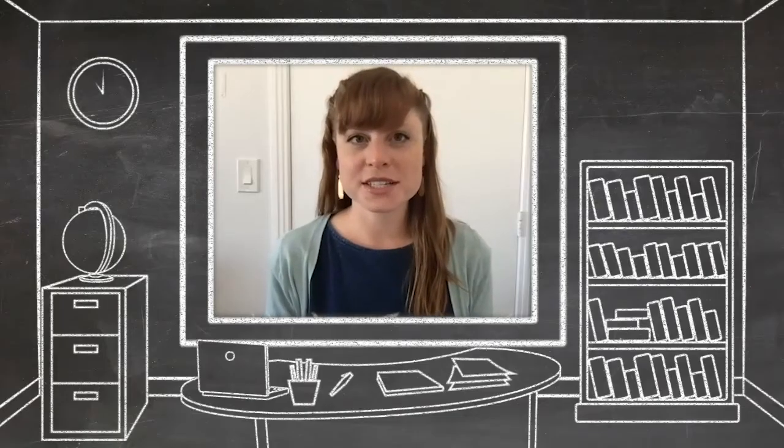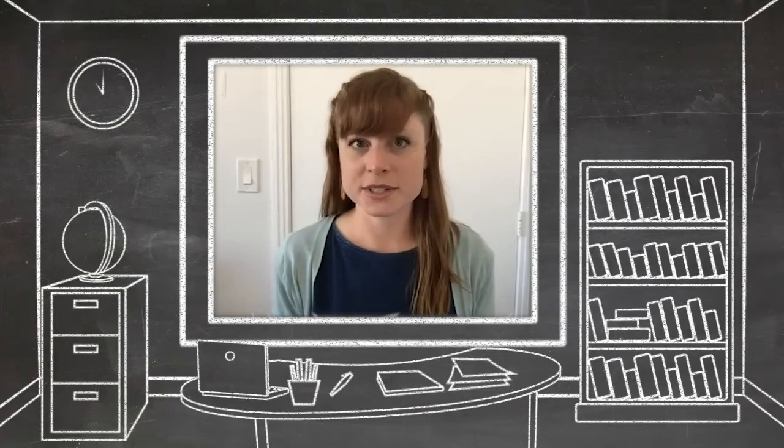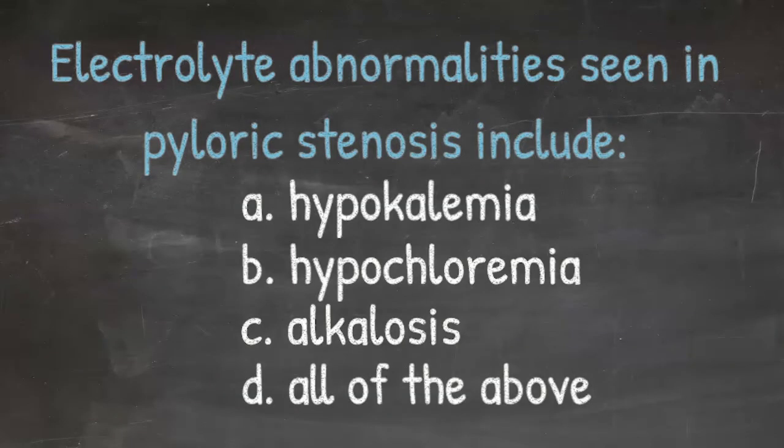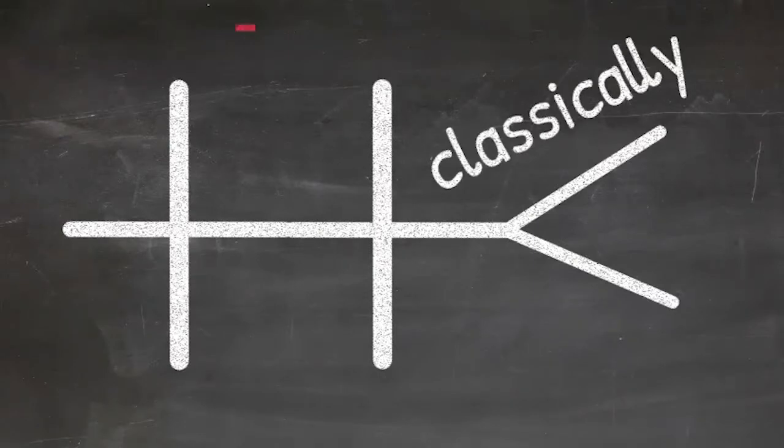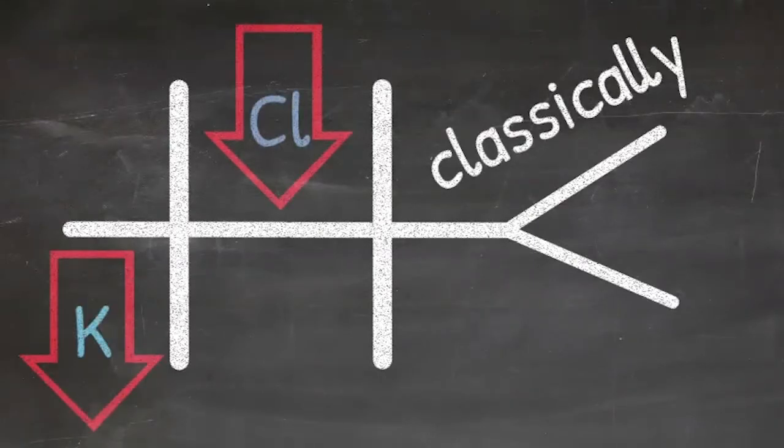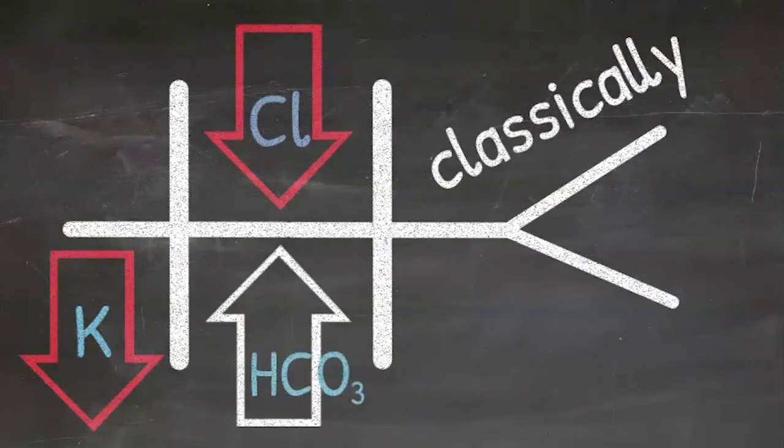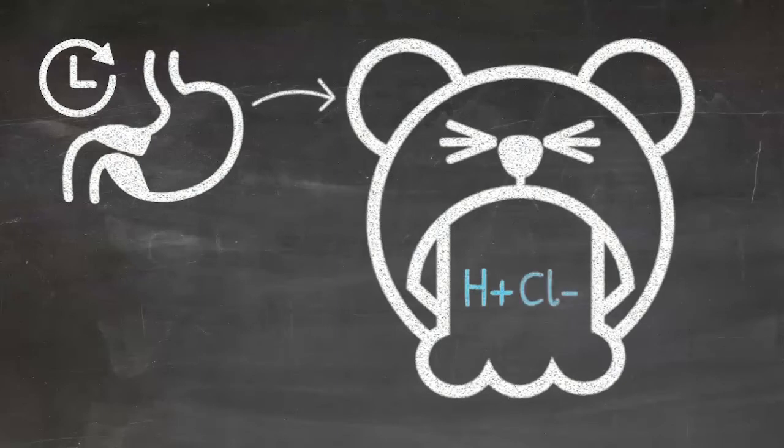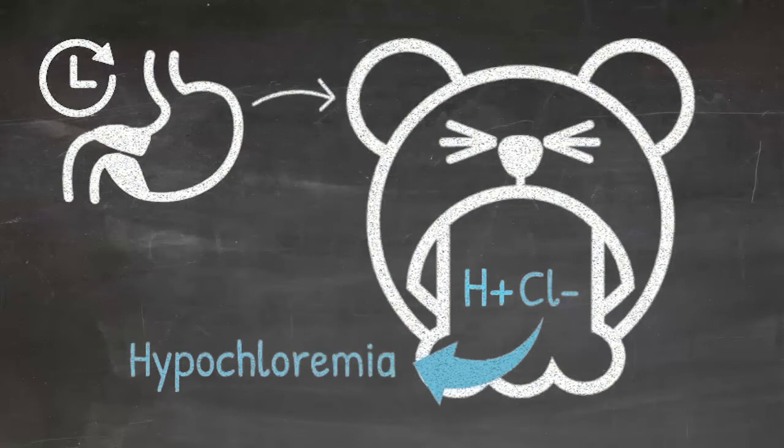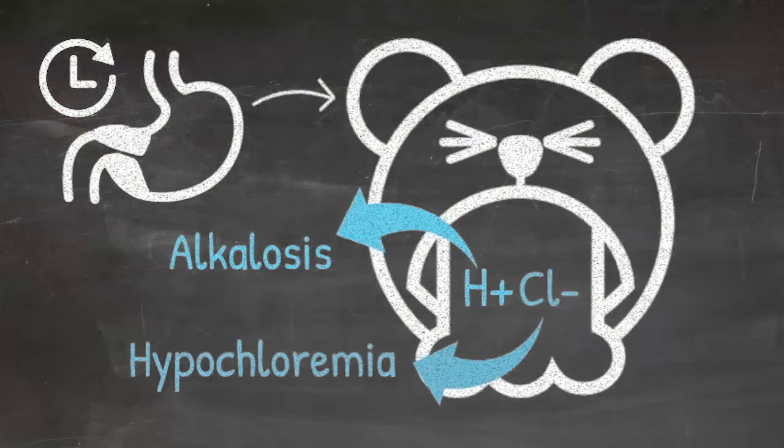Once you diagnose pyloric stenosis, what electrolyte abnormalities are you concerned about? The classic electrolyte abnormality is a hypochloremic-hypokalemic metabolic alkalosis. The mechanism is simple. Prolonged gastric outlet obstruction leads to persistent vomiting, and loss of hydrochloric acid, which leads to hypochloremia, and loss of protons, leading to metabolic alkalosis.